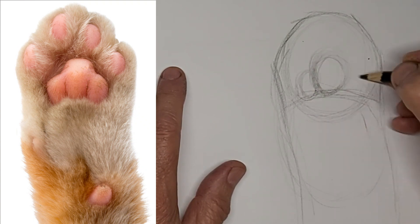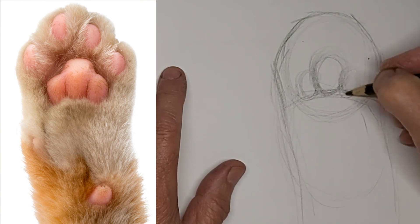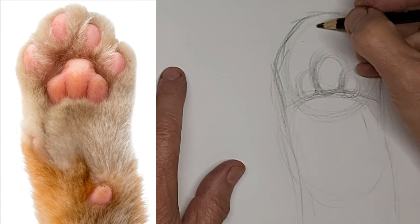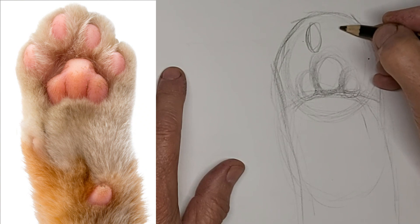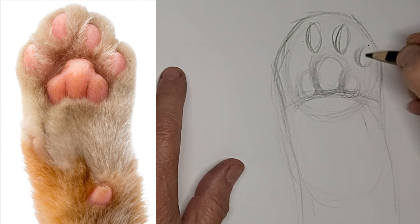That's the middle of that pad. There we go. We can shape the whole thing by putting three circles in. Well, ovals, I guess.